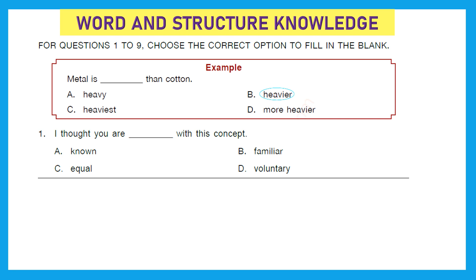The first section is Word and Structured Knowledge. For questions 1 to 9, choose the correct option to fill in the blank. Question 1: 'I thought you are dash with this concept.' The options are: known, familiar, equal, or voluntary with this concept. The right answer should be option B, familiar. 'I thought you are familiar with this concept.' Familiar means having a good knowledge or understanding of something, and that fits absolutely correct.